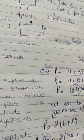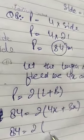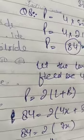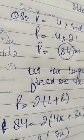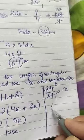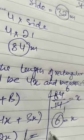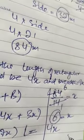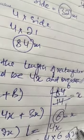Length is 4x and breadth is 3x. So 84 is equal to 2 bracket 4x plus 3x, which gives 84 equals 2 into 7x, that is 14x. We need to find the value of x. 84 divided by 14 equals x. Cancelling, x equals 6. So length equals 4x, that is 4 times 6, which is 24 meters.